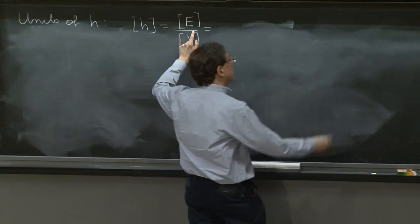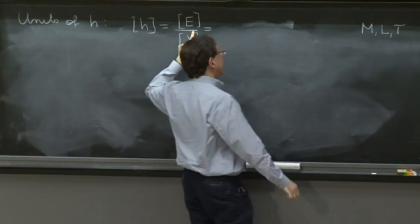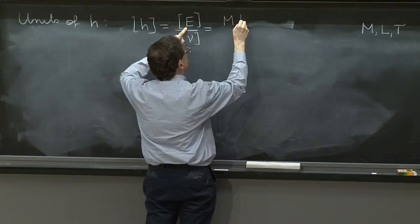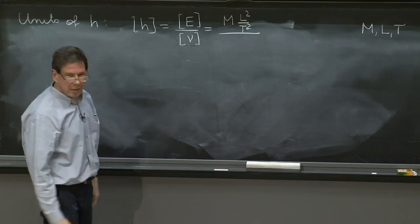Now what are the units of energy? We're going to work with units that are characterized by m, l, and t, mass, length, and time. So energy, you think kinetic energy, and you say mv squared, so that's a mass. And velocity squared is l squared over t squared. So that's units of energy.